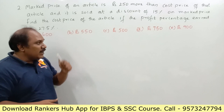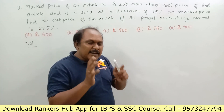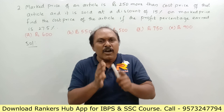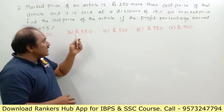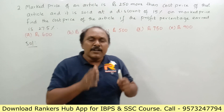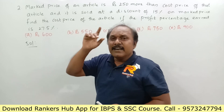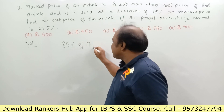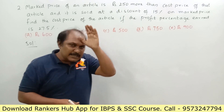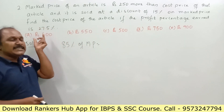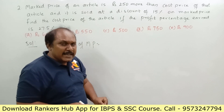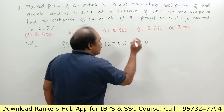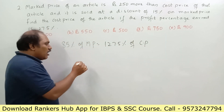Discount is always calculated on marked price, and profit percentage is always calculated on cost price. He is selling the article after offering a discount of 15 percent on marked price. So 85 percent of marked price is the selling price. By selling that article he is getting a profit of 27.5 percent, so the same selling price is also equal to 127.5 percent of cost price.